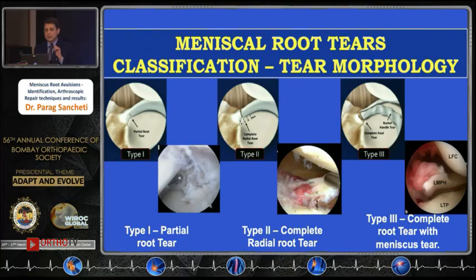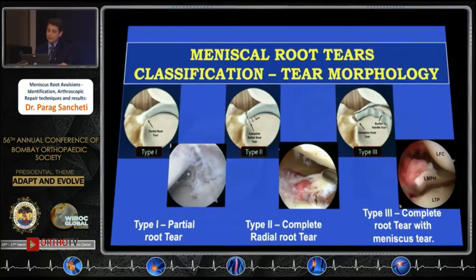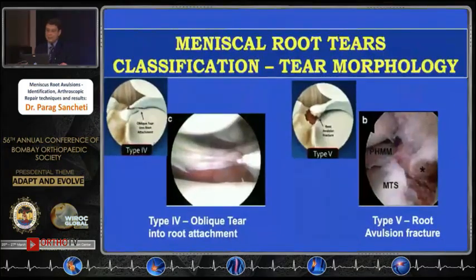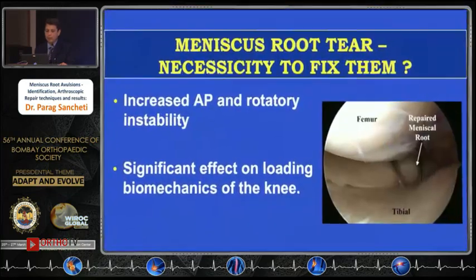Meniscal root tear classification as described by LAPRAD: Type 1 is partial; Type 2 is complete radial root tear; Type 3 is complete root tear with additional meniscus tear; Type 4 is an oblique tear going into the root; and Type 5, which is very rare, is root avulsion fractures.